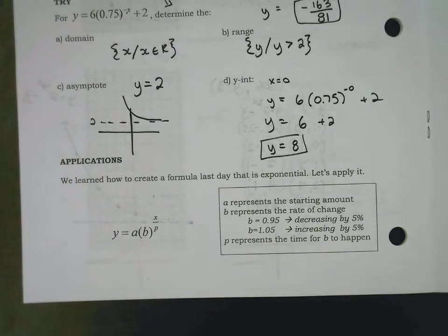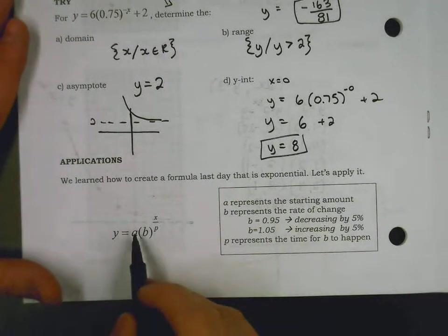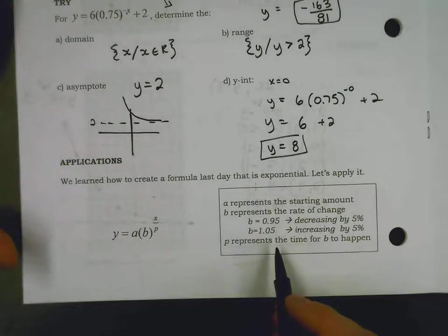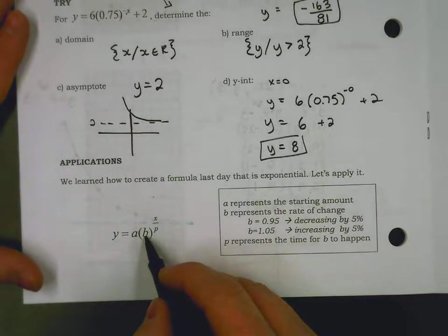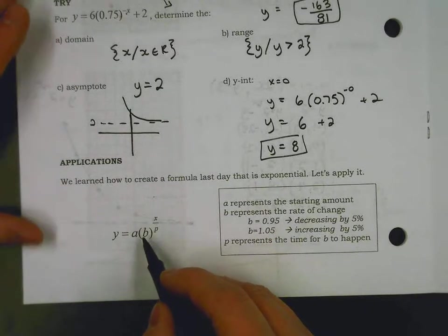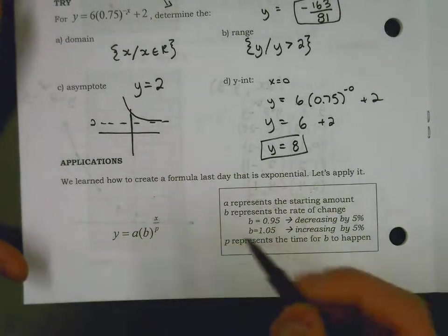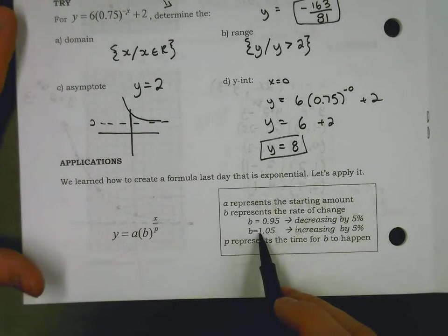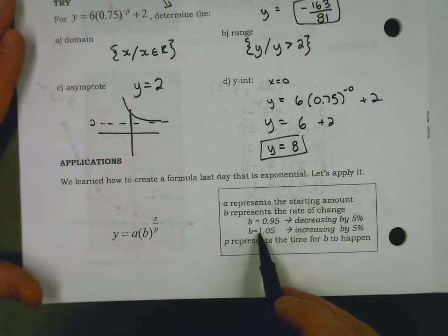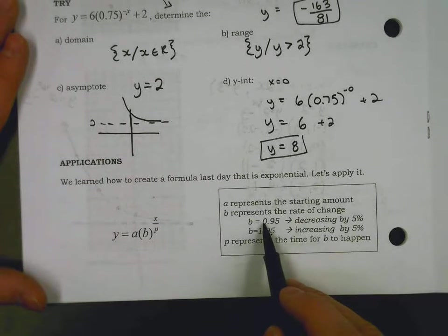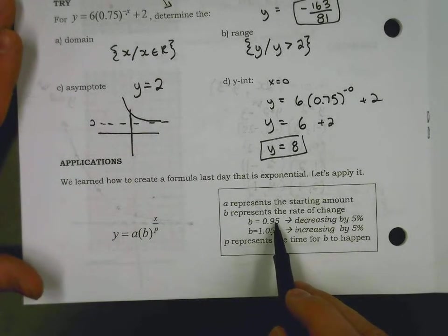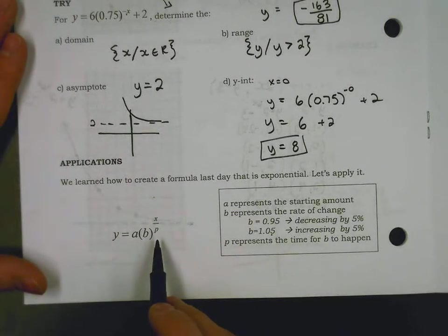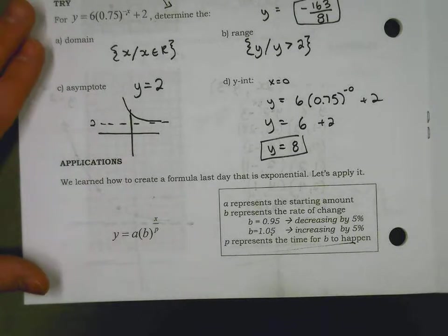We continue our conversation about applications that we started last day. And we learned that there is some base which represents our rate of change. Sometimes you could be told that it's tripling, so you'd say 3, or it's doubling, so you'd say 2. By a factor of 5, you would say 5. And sometimes you could be told that it's increasing by 5%. So you can say anything above a 1 is increasing. So we could say increasing by 5%, 1.05. We could say it's decreasing, starting with a 0, decreasing by 5%. We're keeping 95% of our value, but we're decreasing by 5%. P still represents the time for b to happen. And we'll look at this in a couple examples.